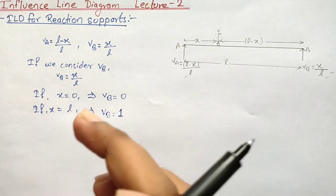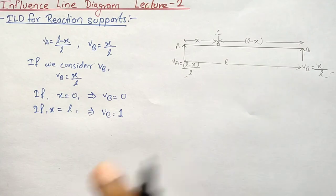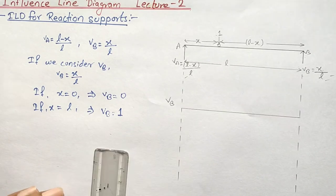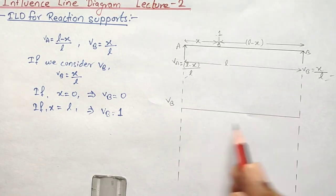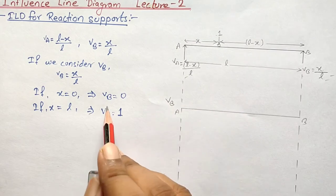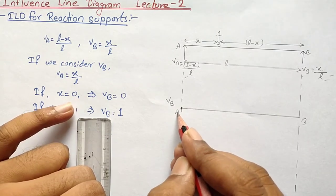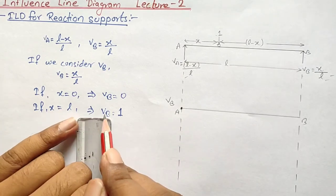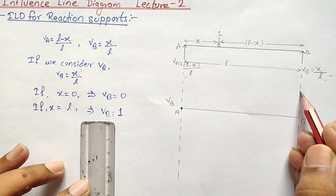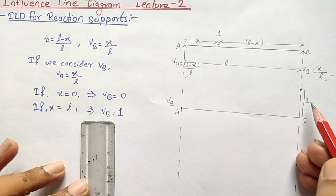Now we draw the influence line diagram for the reaction at support B. We plot the values in a triangular form. On the span AB: at x equals 0 (support A) VB equals 0, so it is on the line; at x equals L (support B) VB equals 1. Assuming this much portion represents 1, we join these points to form the triangle.